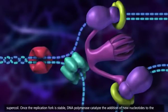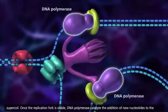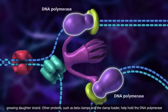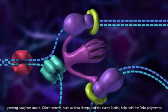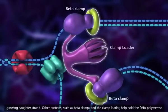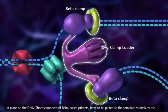Once the replication fork is stable, DNA polymerase catalyzes the addition of new nucleotides to the growing daughter strand. Other proteins, such as beta clamps and the clamp loader, help hold the DNA polymerase in place on the DNA.